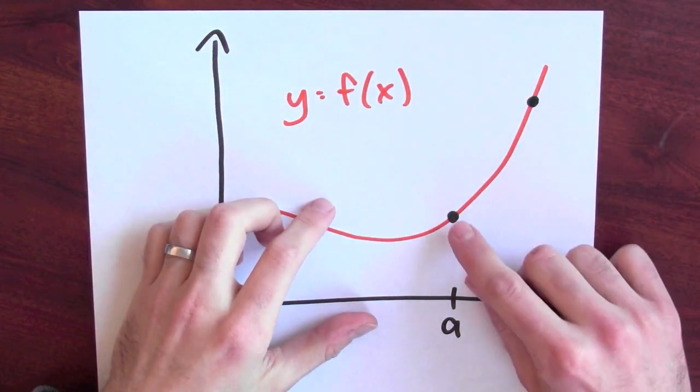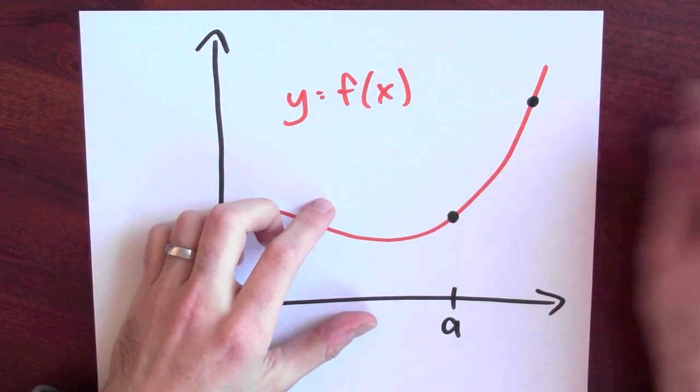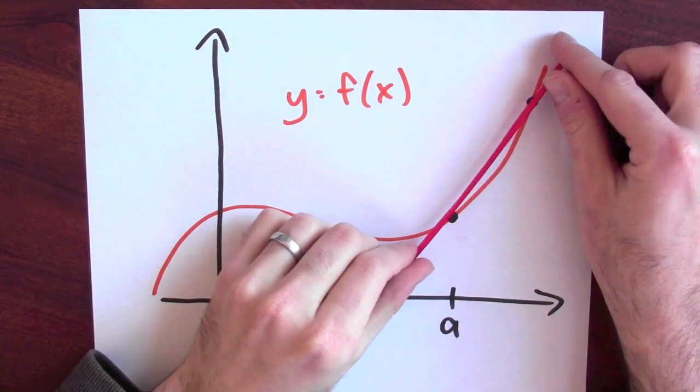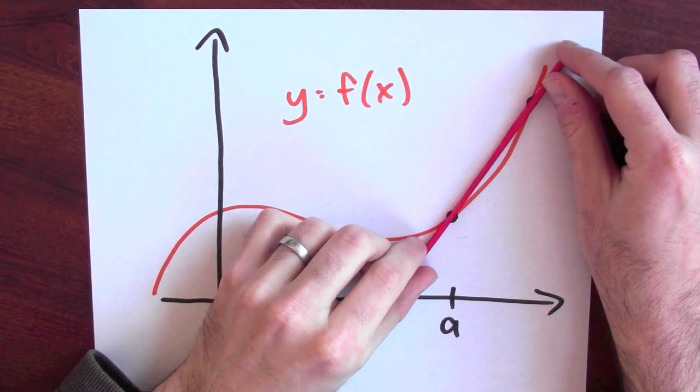Another way to think about this is as a limit of secant lines. By secant line, I mean that I'm going to pick two points on the graph and I'm going to put a line, the secant line, through those two points.